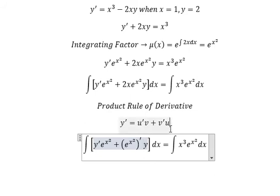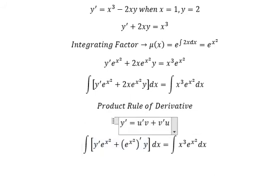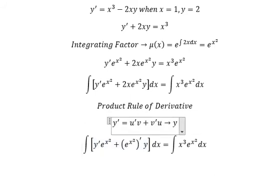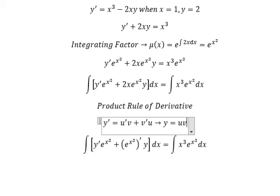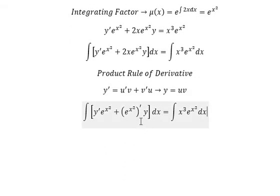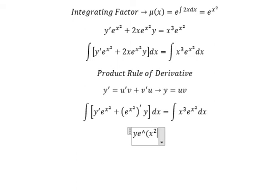So if we do this iteration, we have y equals u·v. And we have y equals e to the power of x squared.